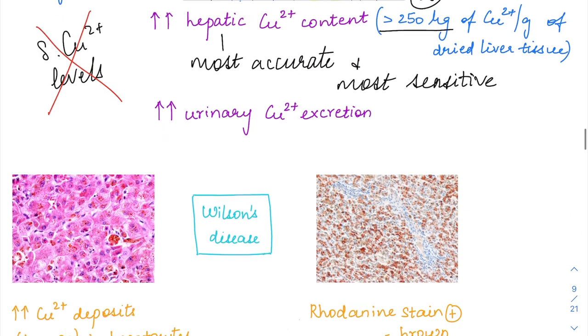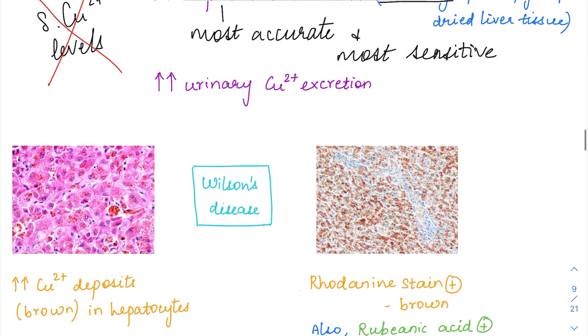You can also measure urinary copper excretion. The urinary copper excretion will be elevated in Wilson's disease. This is the most specific screening test. For screening, you can use urinary copper excretion.